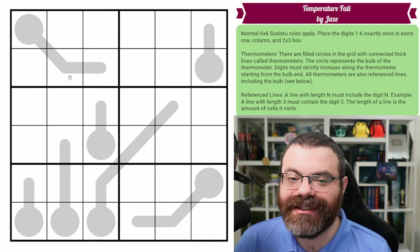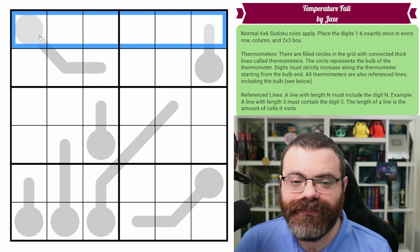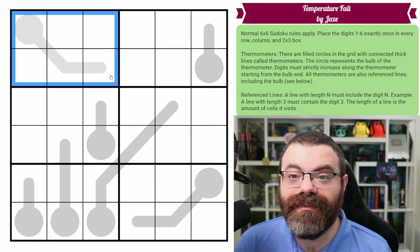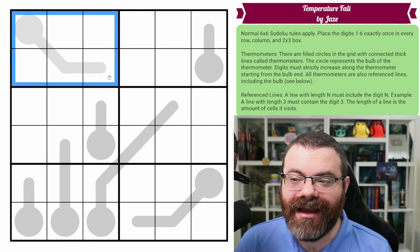So we do have normal six by six Sudoku rules. So in every row, every column, and every two by three box, we are placing the digits one to six exactly once each.